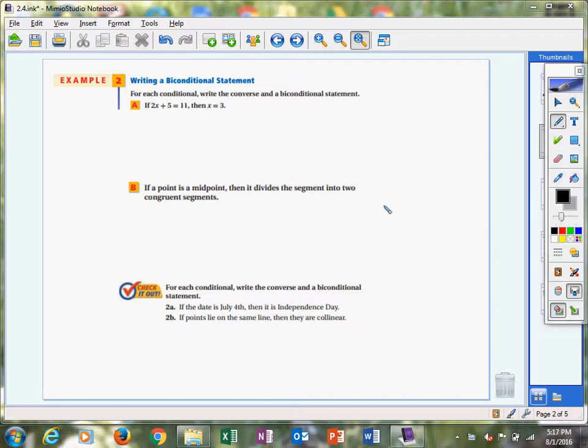So here's our conditional statement right here. If 2x plus 5 equals 11, then x equals 3. So to make this a converse, then we would just say if x equals 3, then 2x plus 5 equals 11.